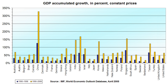Economists distinguish between short-run economic changes in production and long-run economic growth. Short-run variation in economic growth is termed the business cycle. Generally, economists attribute the ups and downs in the business cycle to fluctuations in aggregate demand. In contrast, economic growth is concerned with the long-run trend in production due to structural causes such as technological growth and factor accumulation.